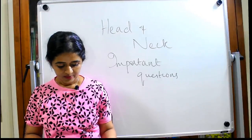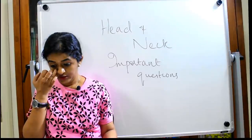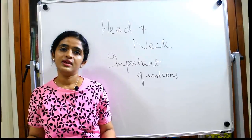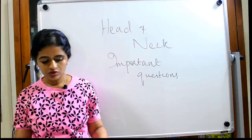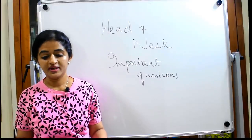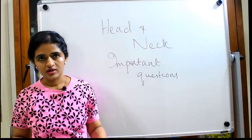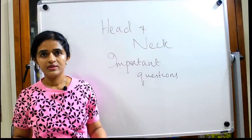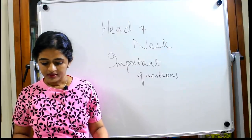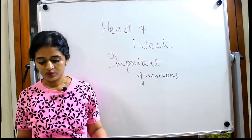Coming to the joints of the neck: the craniovertebral joints — the atlanto-occipital joint and the atlanto-axial joint — are usually asked. You have to study the joints, the ligaments, and the movements occurring at these joints. Hangman's fracture can also be asked as a question.